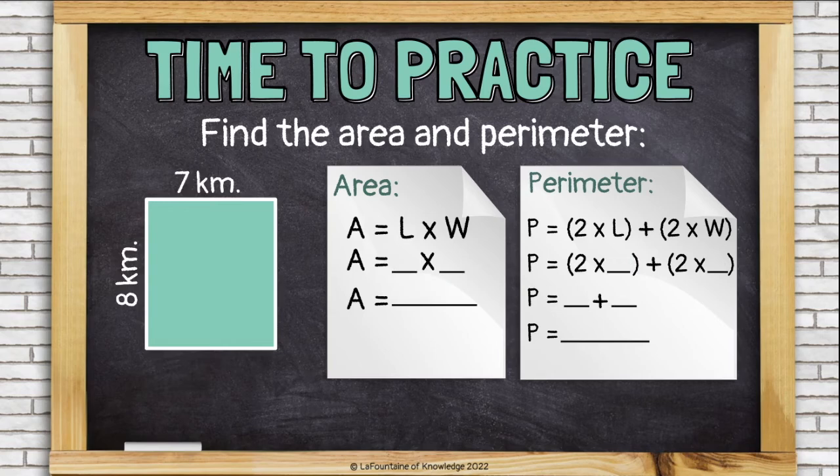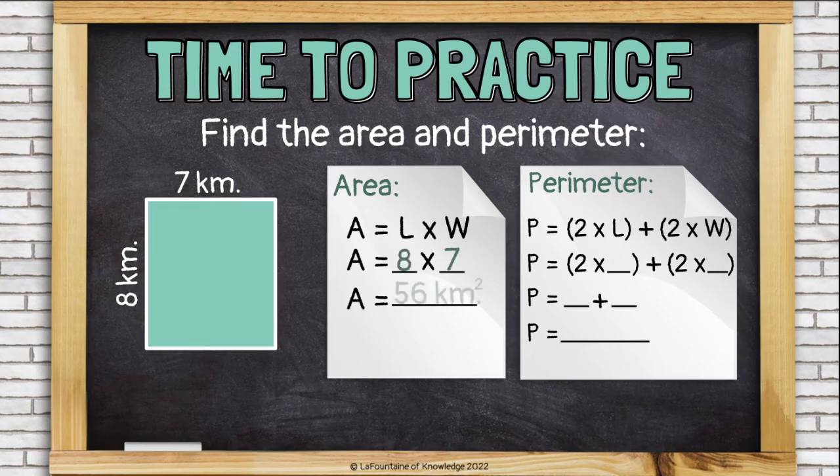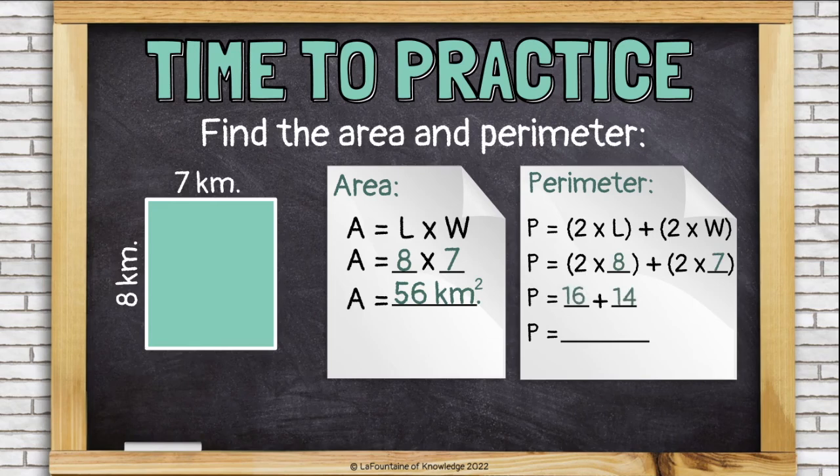One more. This time, our rectangle is 8 kilometers long and 7 kilometers wide. Plug in your numbers and multiply to find the area. 56 square kilometers. Plug in your numbers, double them, and add them together. 30 kilometers is the perimeter.